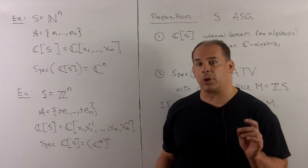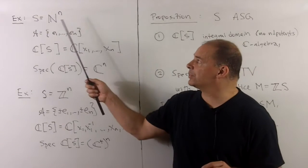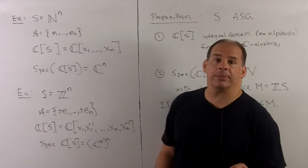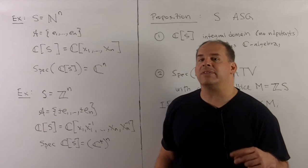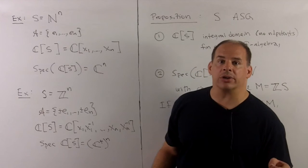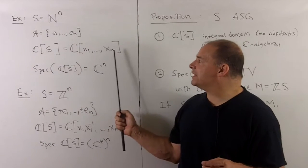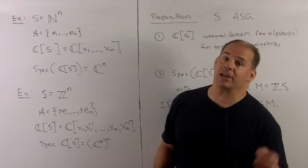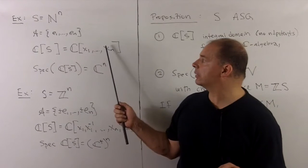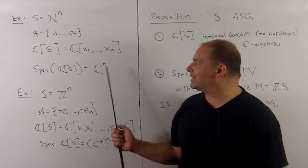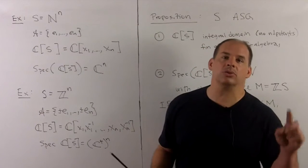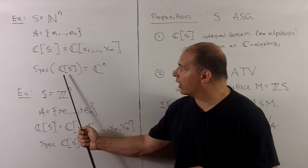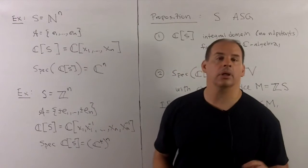Let's run a few examples through our process. First, if S is equal to natural numbers to the N, as an affine semigroup, it's generated by E1 through En, standard basis vectors. Recall these vectors give us the exponents for our characters. So if I use X instead of T, then we're going to get X1 through XN, and that's going to generate the polynomial ring in N variables as a C-algebra. If we take Spec, we're going to get C to the N. Note here, the idea is this is your variety, this is your coordinate ring.